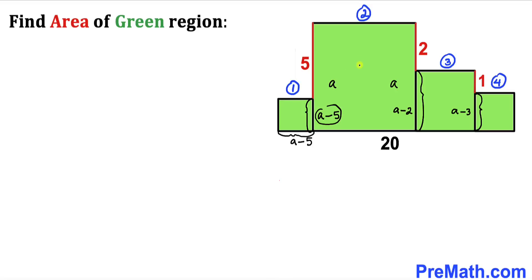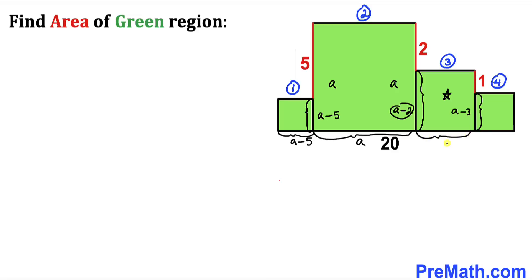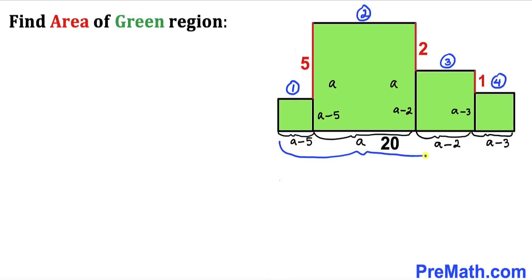For box two, its height is 'a', so its base is also 'a'. For box three, its height is a minus 3, so its base is a minus 3 as well. Similarly, box four's height is a minus 3, so its base is a minus 3. Now let's combine all these individual base lengths.